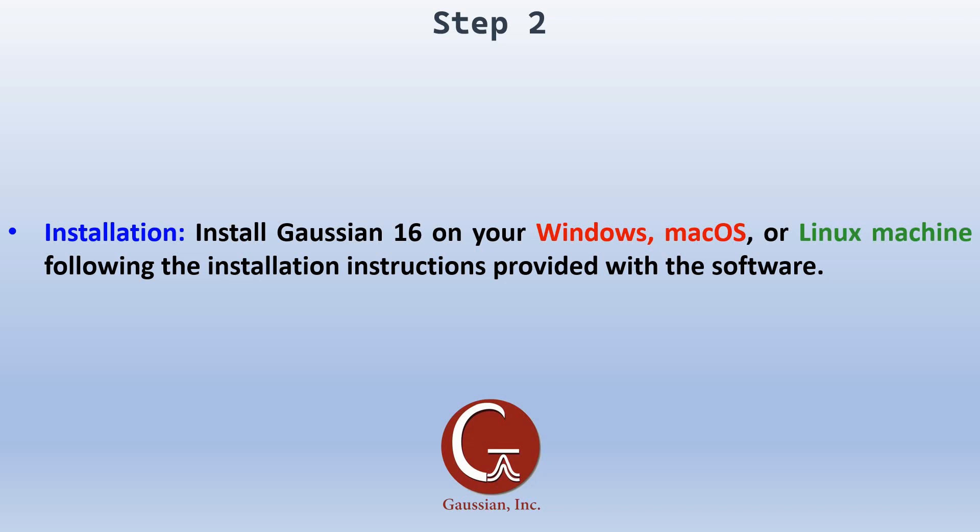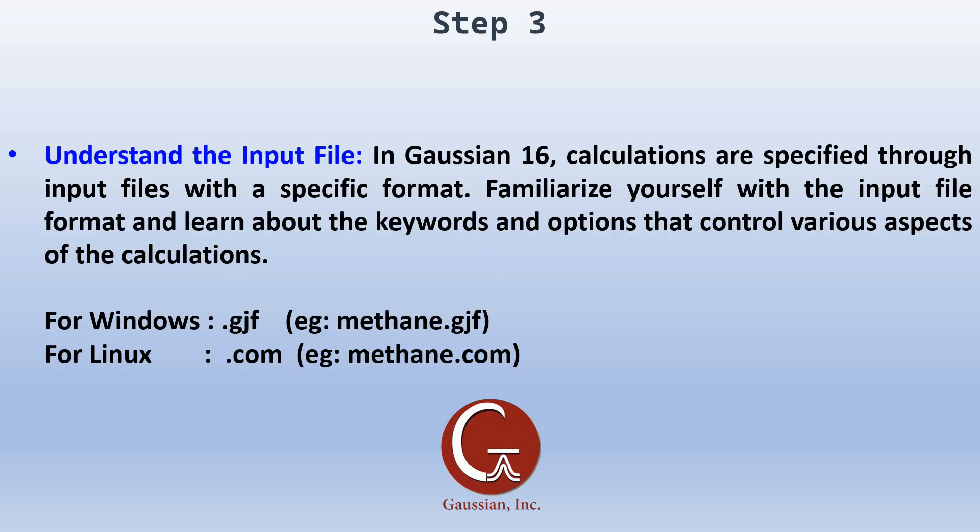Step 3: Understand the input file. In Gaussian 16, calculations are specified through an input file with a specific format. Familiarize yourself with the input file format and learn about the keywords and options that control various aspects of the calculations. For Windows you use a .gjf file; for Linux you use a .com file.